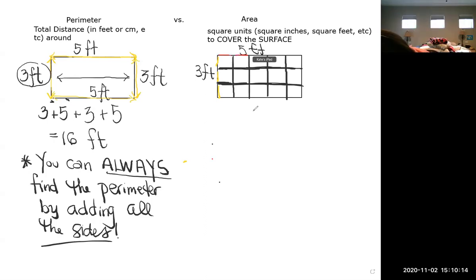One, two, three, four, five. So of course you could always pattern the squares over it and then just count. One, two, three, four, five, six, seven, eight, nine, 10, 11, 12, 13, 14, 15, 15 little square feet. And we abbreviate square feet like this.